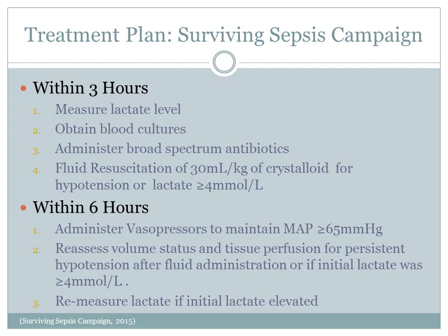Now that we know what sepsis is and how it affects the body, how do we treat it? The Surviving Sepsis Campaign is a joint collaboration of the Society of Critical Care Medicine and the European Society of Intensive Care Medicine, committed to reducing mortality from severe sepsis and septic shock worldwide. They developed guidelines and bundles for hospitals to decrease sepsis mortality. Within three hours, you must measure lactate levels, obtain blood cultures, administer broad-spectrum antibiotics, and provide fluid resuscitation of 30 mL per kg of crystalloid for hypotension or lactate greater than or equal to 4. Within six hours, you must administer vasopressors to maintain a mean arterial pressure of greater than or equal to 65, reassess volume status and tissue perfusion for persistent hypotension or an initial lactate level greater than or equal to 4, and re-measure lactate if the initial lactate was elevated.